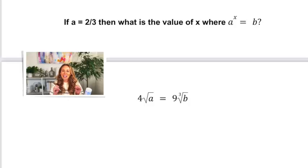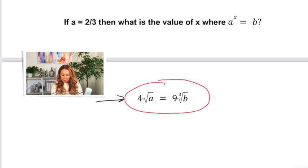This was the hardest problem, I think, on the test. A lot of the students that I spoke with after the test missed this one or got stuck on this one. My way of doing this wasn't very elegant as you will see. It was a little sloppy, a little messy, but I think I got it done. So first of all, they gave us this problem, but they gave it to us in English. So we had to translate it into math. It was like four times the square root of a equals nine times the cube root of B. So you had to be able to write that out right here. Okay. And then they said, if a equals two thirds, then what is the value of X where a to the X equals B? Okay.